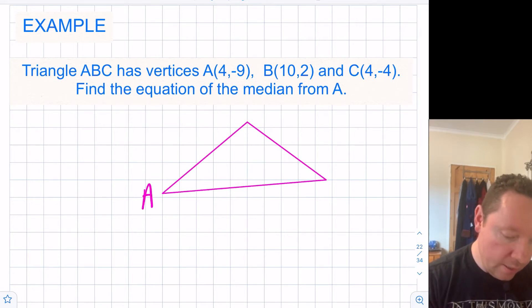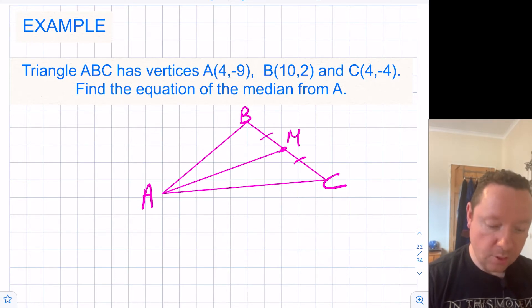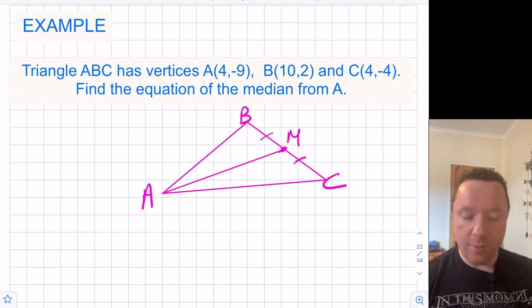Let's just call that A. This is B and this is C. This is the median from A so if I draw a line from A we know that that's going to cut this opposite line in half right there. Let's call that point that it joins, let's call it M just to give us a reference point, M being midpoint.